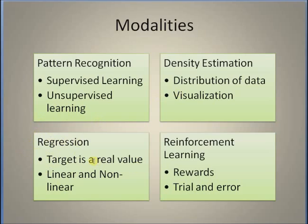The next modality is regression. In regression, the target or goal is to assign a pattern or a sample to a real value, or how to extract a real value given a certain pattern. This is different from the classification problem, where the target is to assign a single numerical category. In regression, the required output is usually a real value — a continuous value.